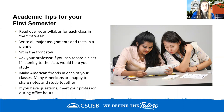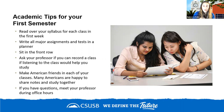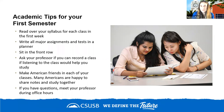Second: once you've read through all your syllabi, write all major assignments and tests in a calendar or planner. Use a paper planner or set phone alerts — maybe 24 hours before each assignment is due — so you get a reminder. Mapping everything out lets you see across all your classes what's coming due and what tasks may require more or less time.